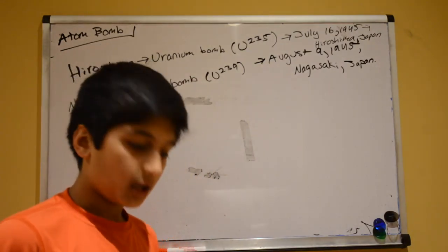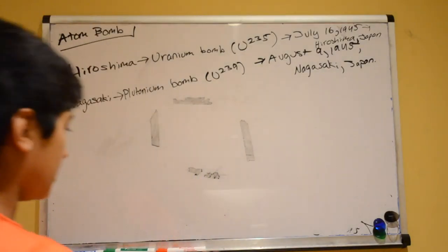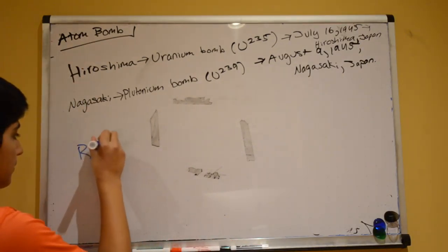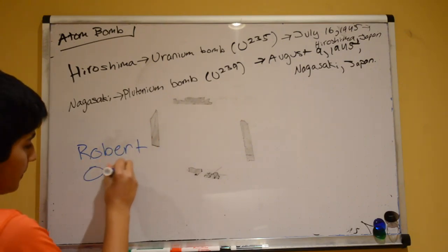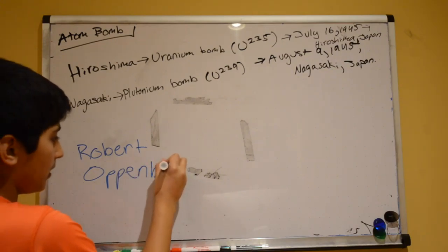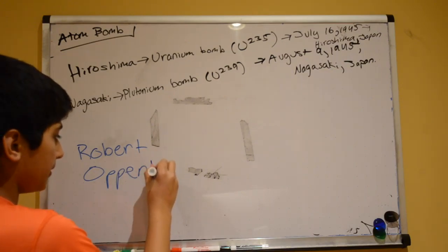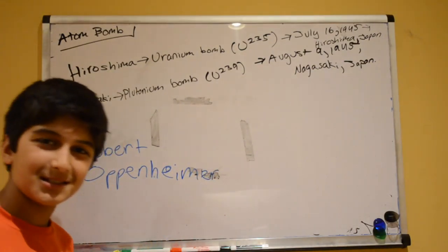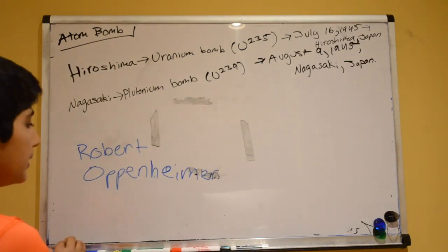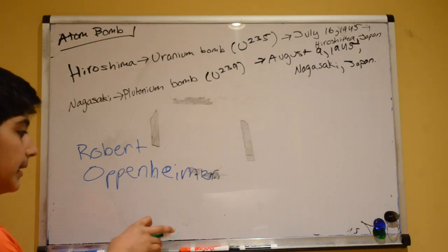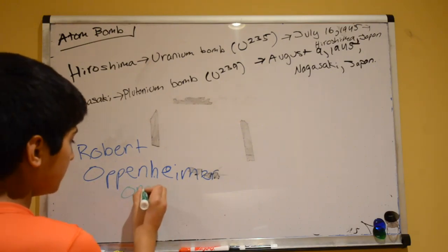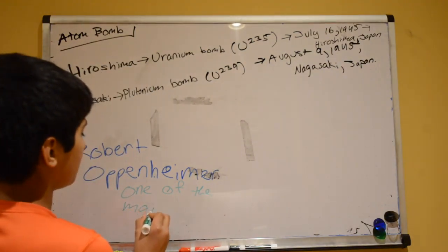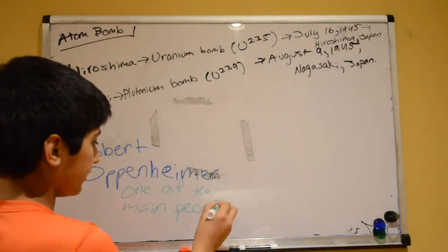Now when we talk about the atom bomb, a very famous name you might hear very often. Robert Oppenheimer. You have to be very careful about how you spell his name. Robert Oppenheimer was considered to be one of the main people who worked on the atom bomb.